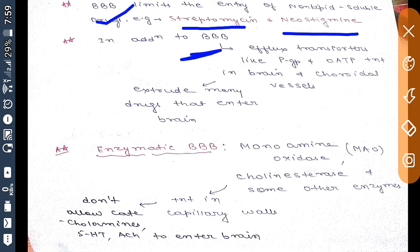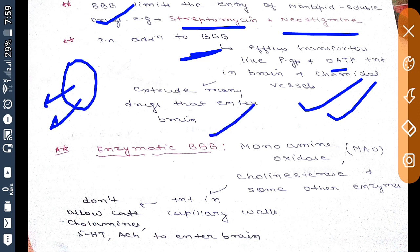In addition to blood-brain barrier, there are some efflux transporters like P-glycoprotein or OATP present in brain and choroid plexus. They will extrude many drugs that enter brain. They are efflux transporters, means transporting drugs outside from the cell. So these are the two mechanisms which are limiting the entry of the drug into the cell. The third one is enzymatic blood-brain barrier. There are monoamine oxidase,